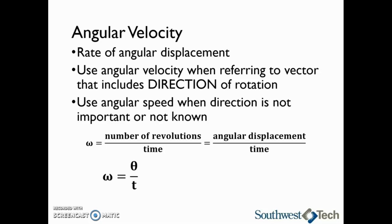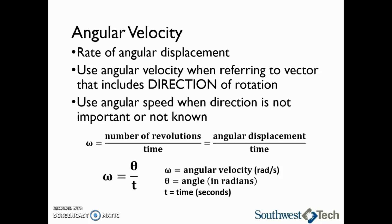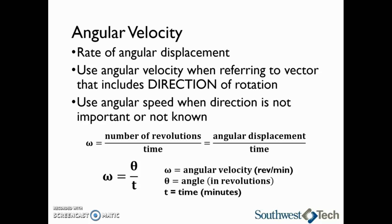We can express this as omega equals theta divided by t, where omega is the angular velocity in radians per second, theta is the angle in radians, and t is the time in seconds. Alternatively, omega can be the angular velocity in radians per minute, where theta is the angle in revolutions and t is the time in minutes. Be sure you read what the problem is asking for and then give omega in those units.